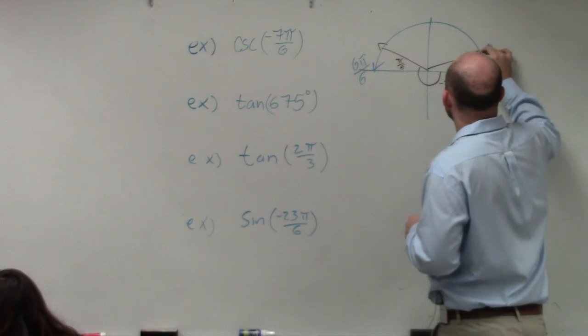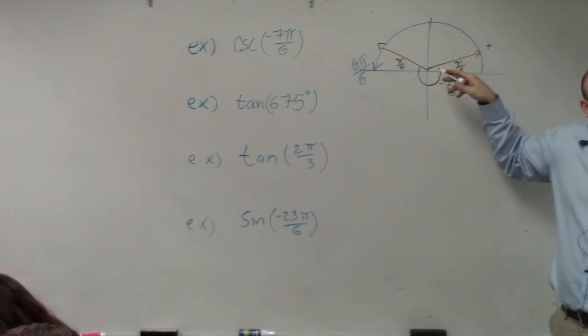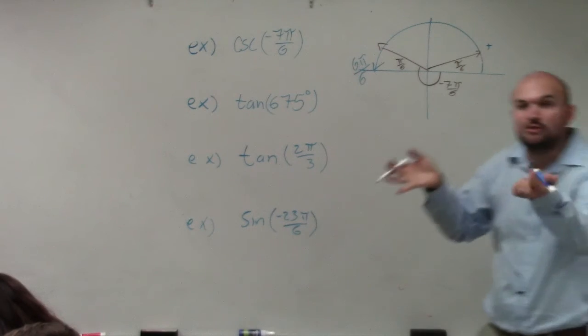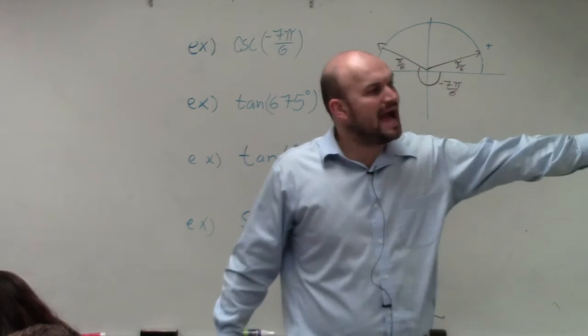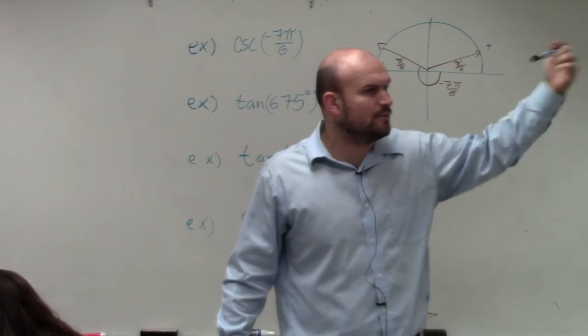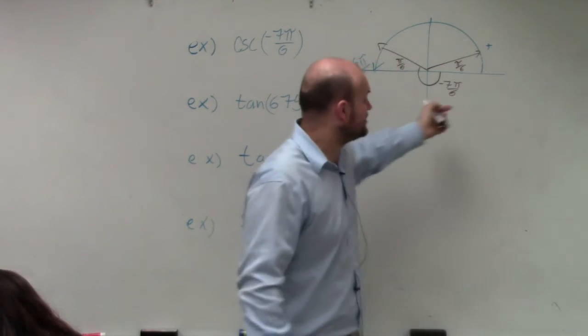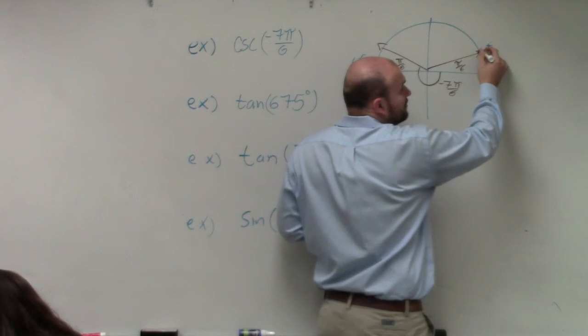So what's nice about the unit circle, or reference angles, is do we know what the value is of π over 6? Because as long as we know the reference angle, we can go back to the unit circle and say, what was the value? What is the point in the first quadrant? And you guys should know the first quadrant.